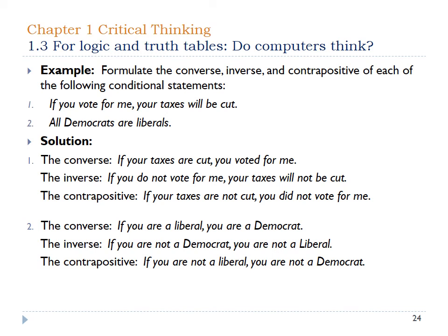All Democrats are liberals. The converse: if you're a liberal, then you're a Democrat. The inverse: if you're not a Democrat, then you're not a liberal. The contrapositive: if you're not a liberal, then you're not a Democrat. These examples assume the original conditional statement was accepted. If we look at it mathematically with truth tables, the converse, inverse, and contrapositive all make sense relative to the original conditional.